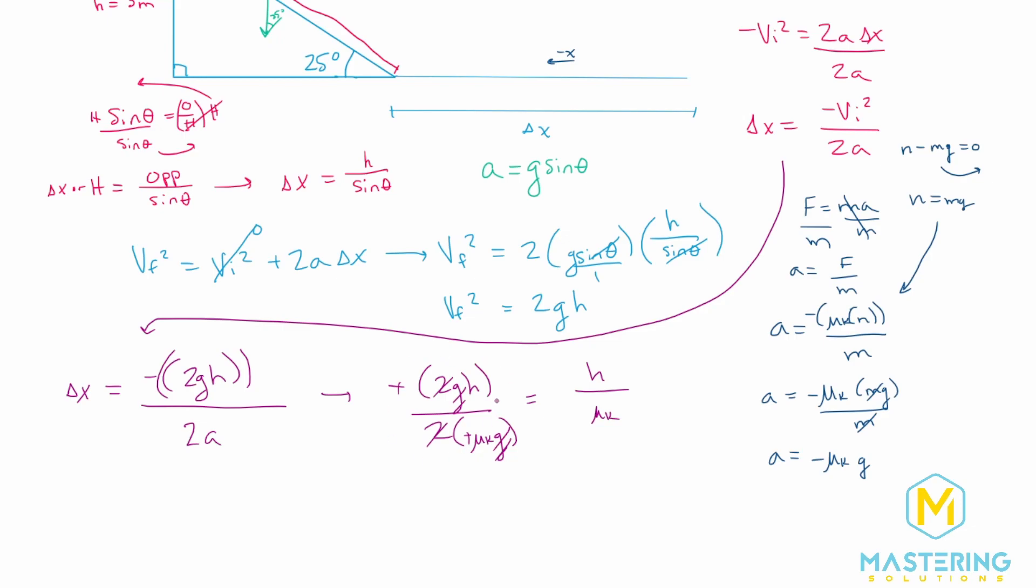So all of that simplified, and all we do is we take the height divided by the coefficient of kinetic friction, and that will give us how far we go. It sounds crazy because we had to go through like all these crazy steps just to get to that, but it's pretty cool that that is all we need for this question.